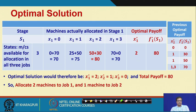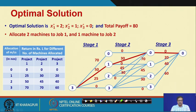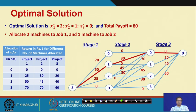The final answer is: allocate 2 machines to job 1 and 1 machine to job 2. Two machines give a return of 50, one machine gives a return of 30, nothing at stage 3 (x_3 = 0), and therefore 80 is the total maximum possible return. This is an extension of the investment problem approach, and using similar logic we have found the answer for the machine allocation problem.